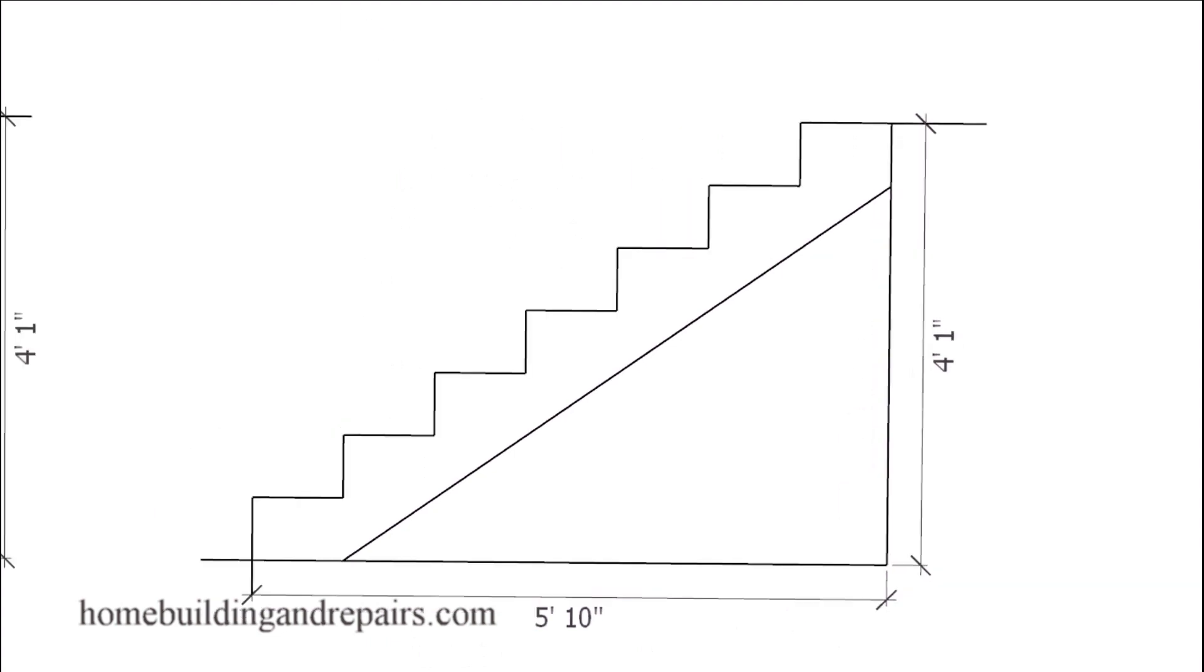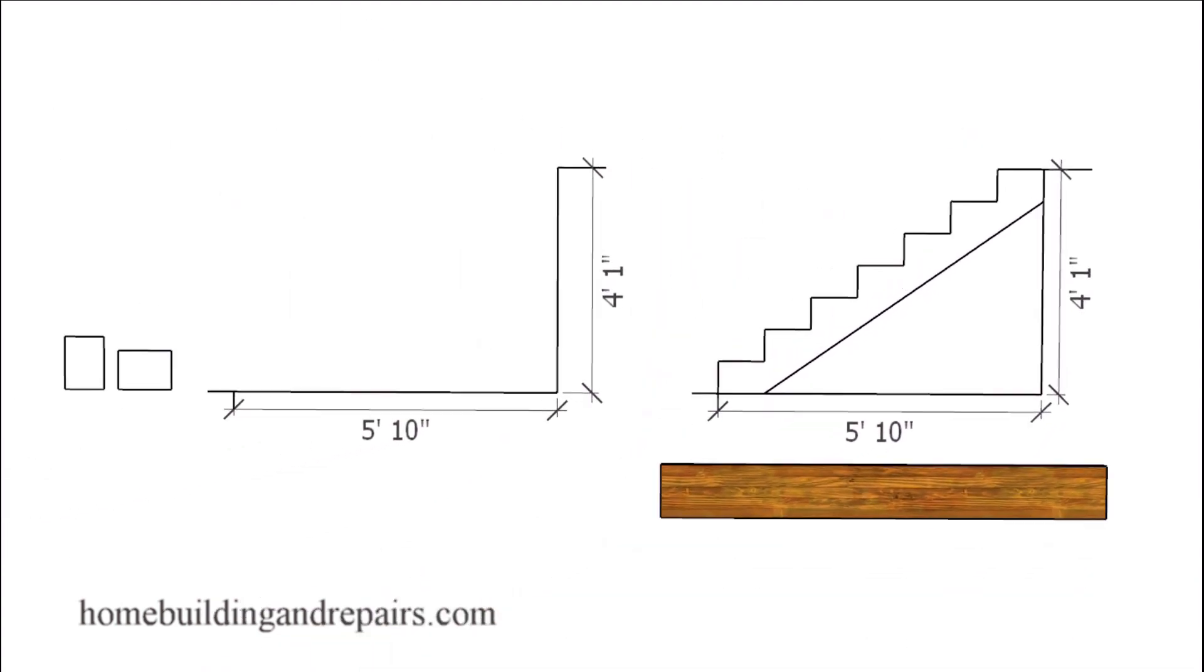Let's zoom out here. We're starting with this to calculate the length of the stringer. If you're not working with building plans and have the actual measurements, you can lay it out on your project and simply measure from this point to this point. If you end up with 7 foot 6 inches, you can buy an 8 foot piece of lumber for your stair stringers.